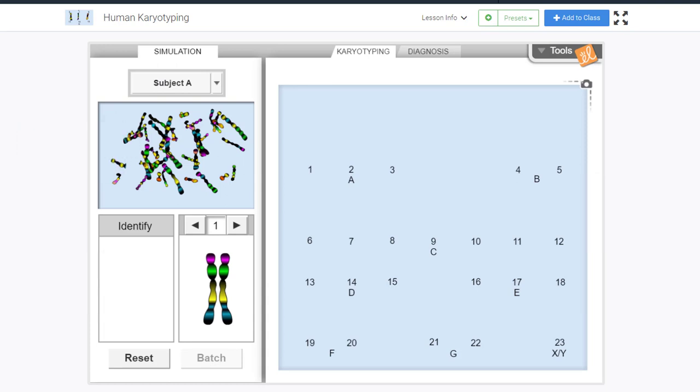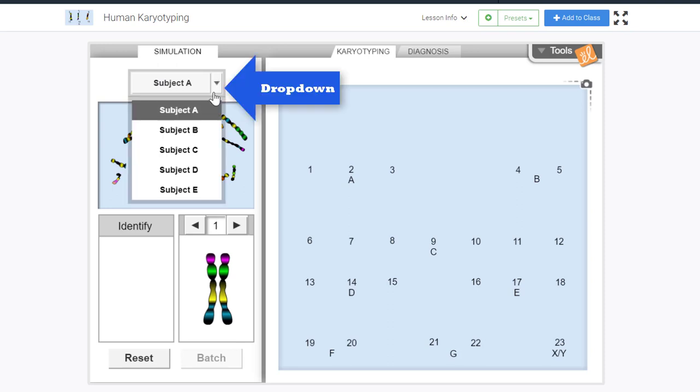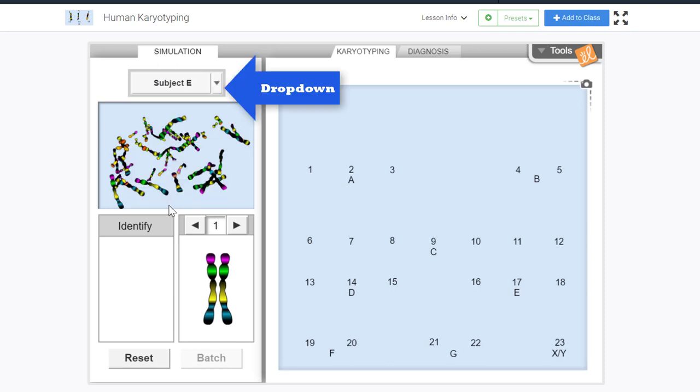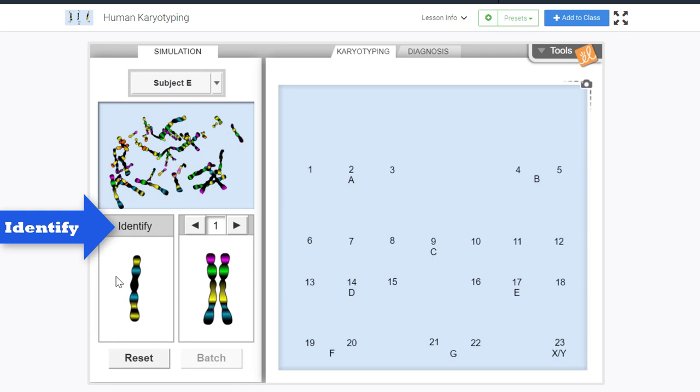Let's take a look to see what the sex chromosomes tell us about subject E. Let's start matching chromosomes and see what we discover. First, we need to change our subject to subject E by clicking on the down arrow on the simulation tab. We can then move our mouse over the chromosomes and select one by clicking on it and dragging the chromosome down to the identify box.